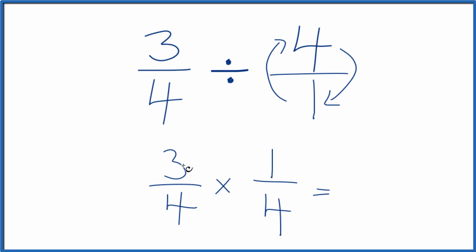And we can just multiply. Three times one, that's three, and four times four is 16. So three-fourths divided by four, we get three-sixteenths.